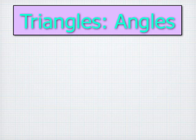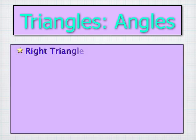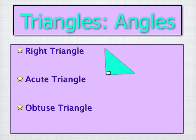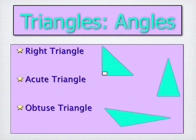All right, triangles can be categorized based on the size of their angles. There's a right triangle, an acute triangle, and an obtuse triangle. Let's see what they look like here. Here are some examples of each.